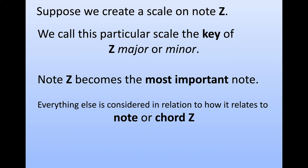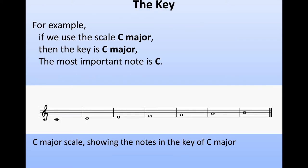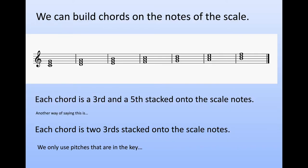Suppose we create a scale on note Z, and we call the notes in this particular scale the key of Z major or minor. Then note Z becomes the most important note — everything else is considered in relation to how it relates to note Z. For example, C major: the most important note is C, and we can build chords on these notes by stacking thirds and fifths on top of them.